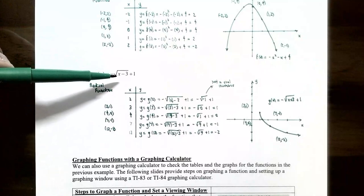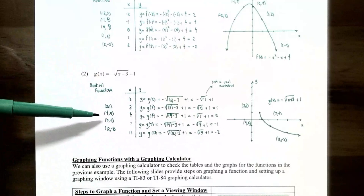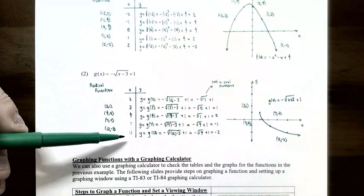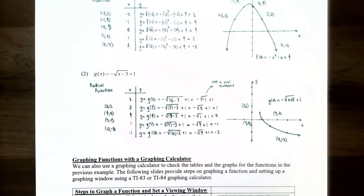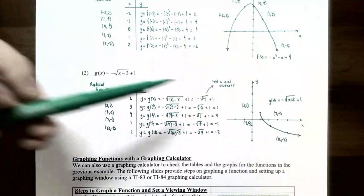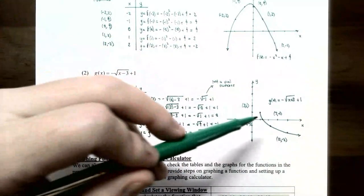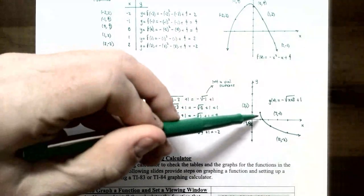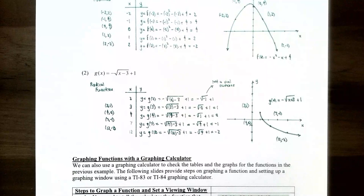Substituting x = 4 gives output 0, so (4, 0) lies on the x-axis. When x = 7, the output is -1, giving (7, -1). When x = 12, the output is -2, giving (12, -2). Plotting these four points, the graph starts at x = 3 because anything to the left gives a negative inside the square root. So the graph starts at (3, 1) and continues to the right indefinitely, shown with an arrow.